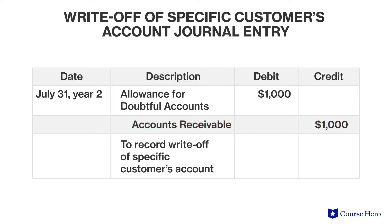At this point in time, the allowance, which represented only an estimate, has become certain. Therefore, the allowance can become an actual write-off.